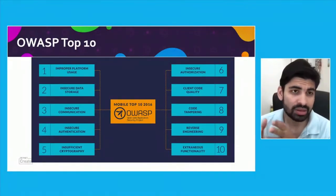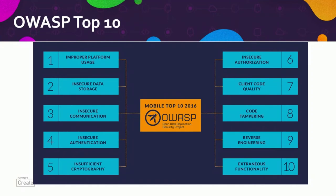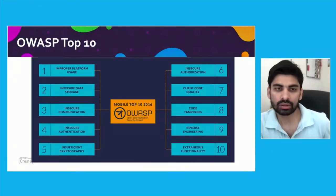The next step is understanding OWASP Top 10. OWASP stands for Open Web Application Security Project — it's a community-based approach identifying the top 10 threats in each field. It originally focused on web applications but has since expanded to mobile and IoT. What you see on the slide is the latest OWASP Top 10 for mobile — these are the major areas of threats identified in production apps by the OWASP community, and the major vulnerabilities which can happen in your app.